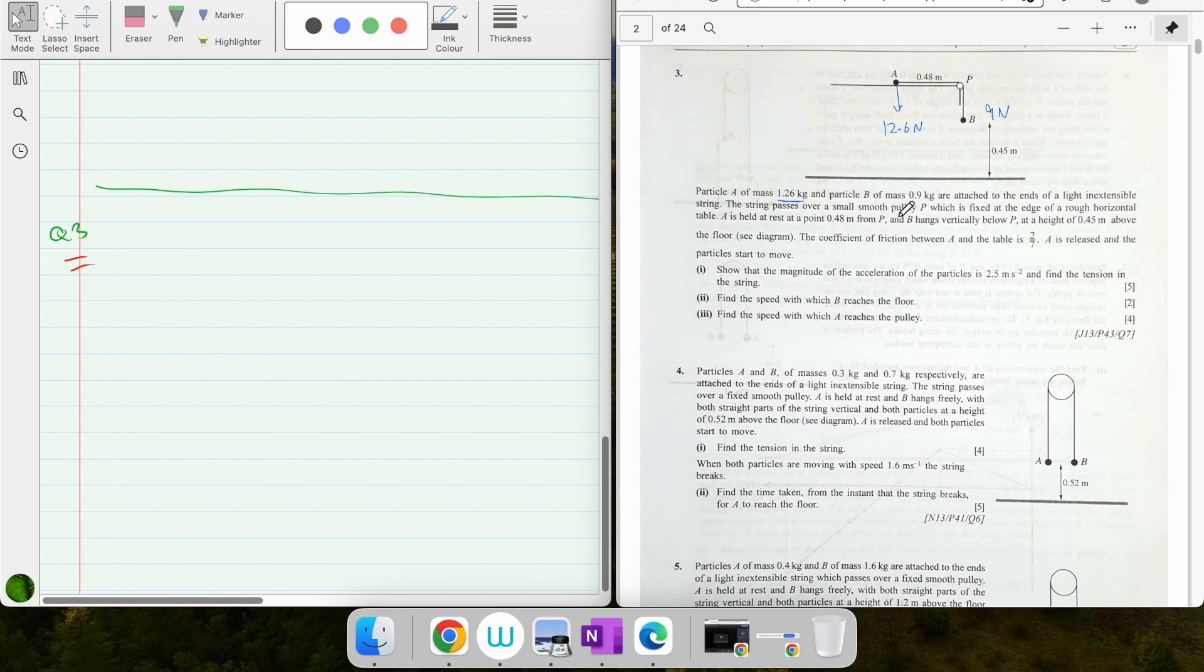The string passes over a small smooth pulley which is fixed at the edge of a rough horizontal table. If it's rough, we're going to have friction - this is mu R and this is R normal contact force.